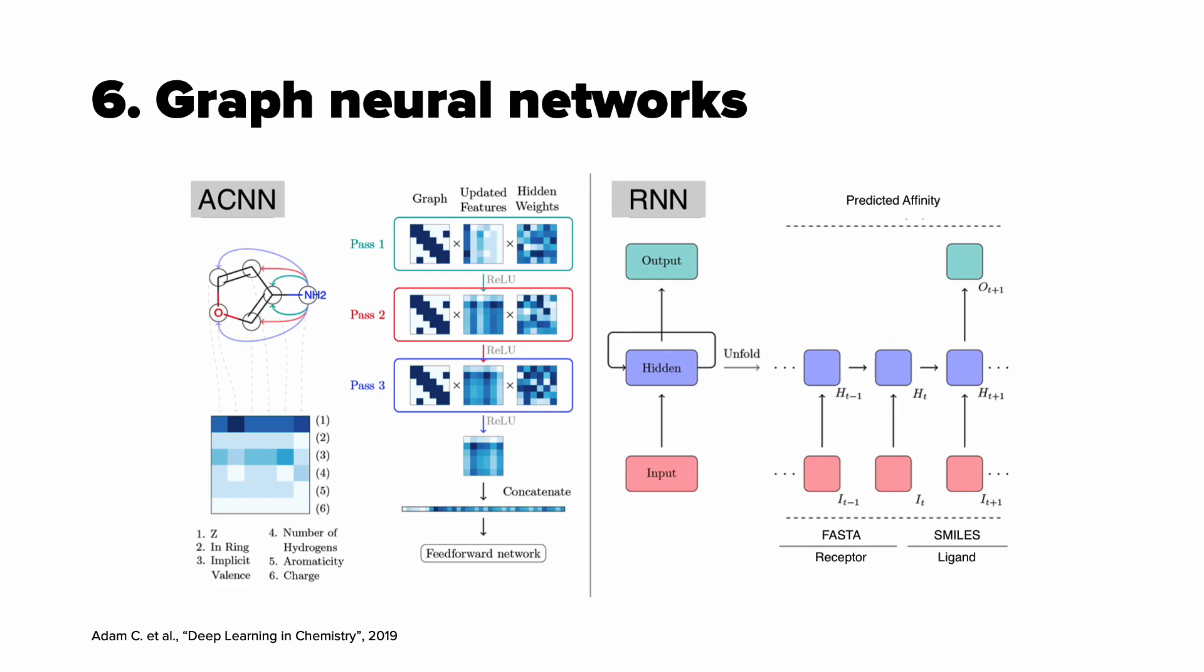There are two general kinds of graph neural networks. Convolutional, you can see to the left, and recurrent to the right. The main difference between recurrent and convolutional graph neural networks is that recurrent apply the same set of weights until a convergence criteria is met, whereas convolutional apply different weights at each iteration.